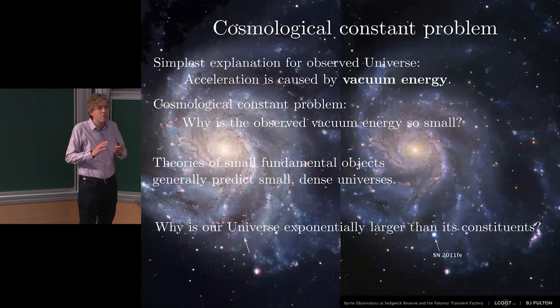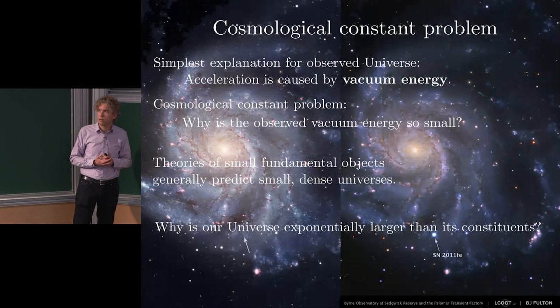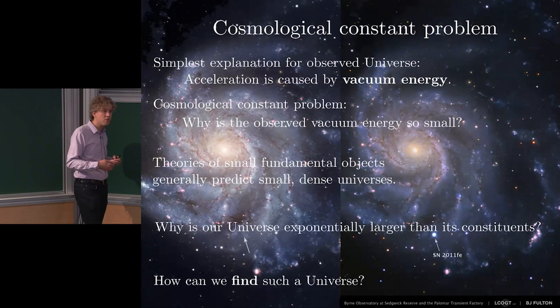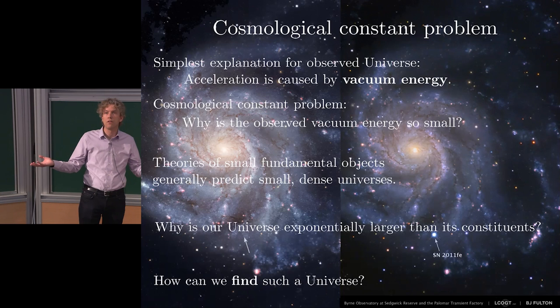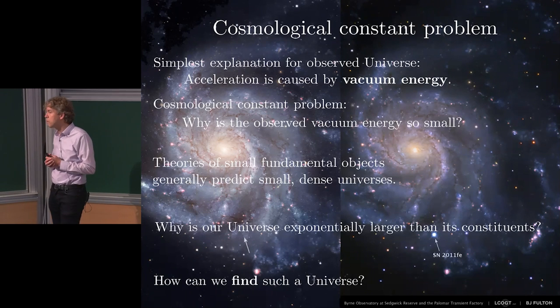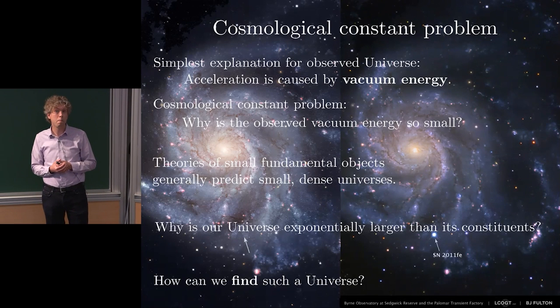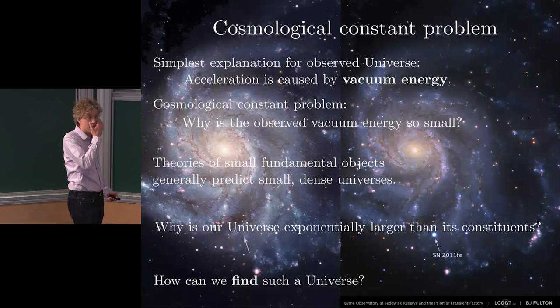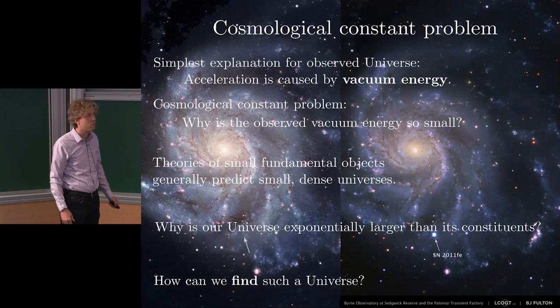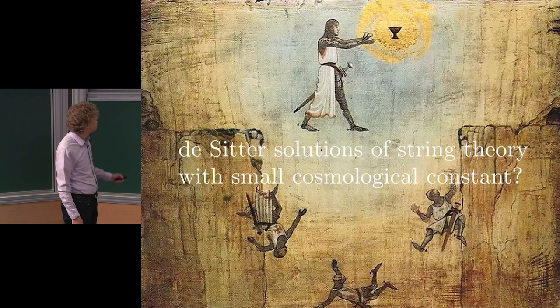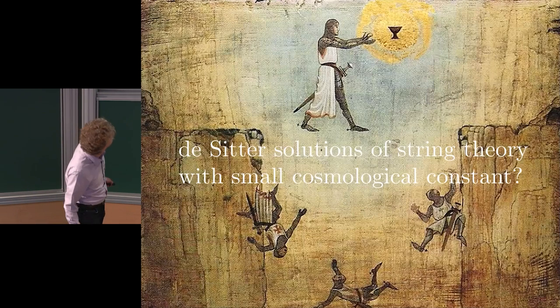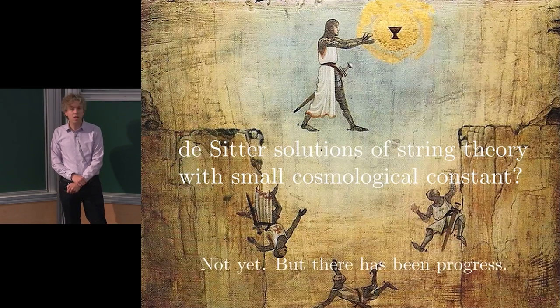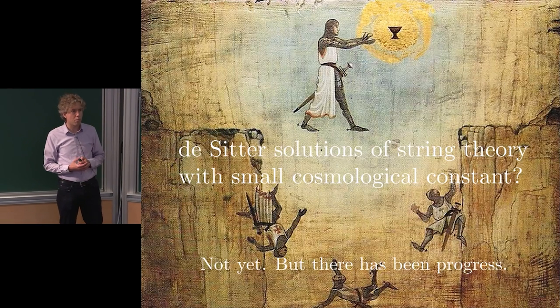This problem is far too hard. I have nothing to offer on this question. But here's a question which is pretty close to it on which I can offer something: how can one find such a universe? How can you take a theory of small constituents and exhibit an exponentially large universe? This is literally the problem Alessandro was talking about. How can we exhibit scale separation in solutions of string theory? That won't necessarily explain why the universe in which we live has this property, but it's certainly a necessary first step to show that our theories have the capability of producing exponentially large universes.